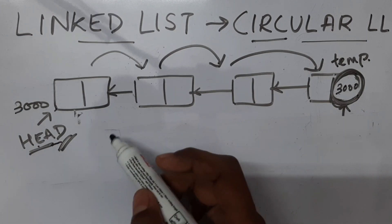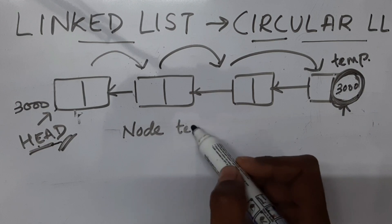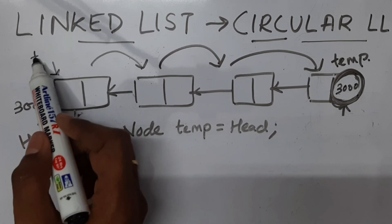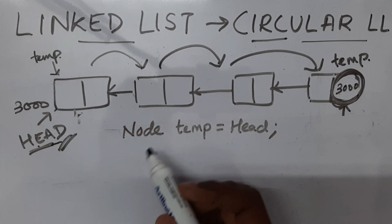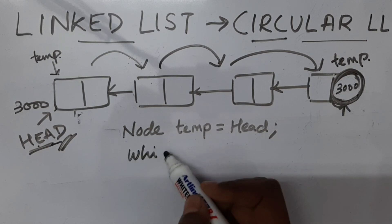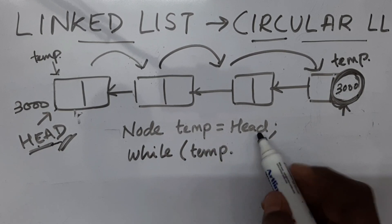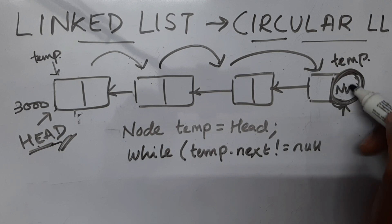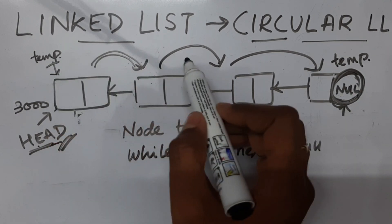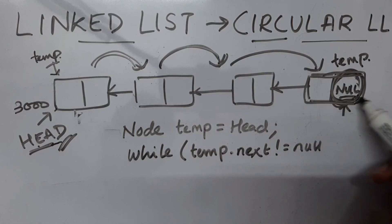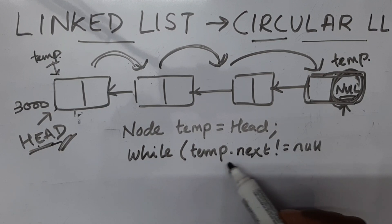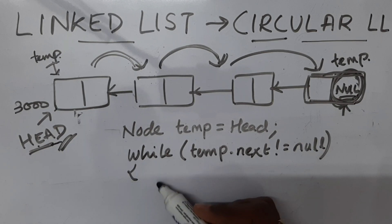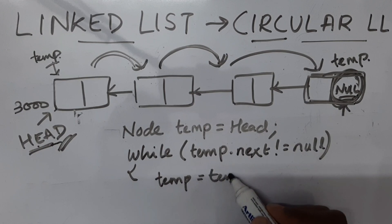As I mentioned, I'll create a node called temp and make temp point to the first node. So now I have created a node called temp representing the first node. Now I'll use a while loop: while temp.next is not equal to null, I have to make temp move to the next node. So while temp.next is not equal to null, you move to the next node using temp equal to temp.next.